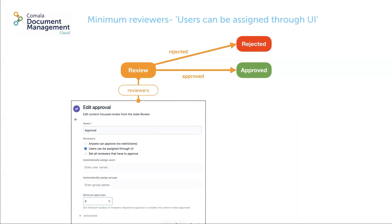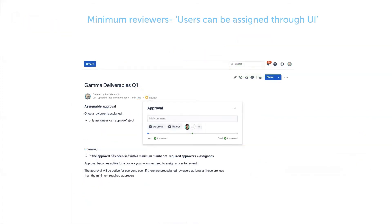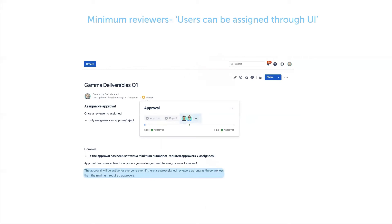If you're using minimum reviewers when you have an assignable approval, you simply have the minimum number of approver avatars added. You don't have to assign anyone to the approval, but assigning someone does not stop anyone with edit and view permission for the content from undertaking the review. When using the minimum reviewers with an assignable review, if the approval has been set with a minimum number of required approvers which is greater than the assignees, the approval is active for anyone. Once you have a number of assignees equal to that minimum or greater, the approval buttons become disabled for all other users.